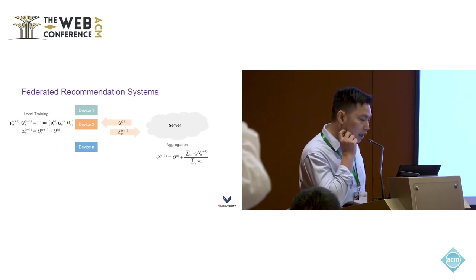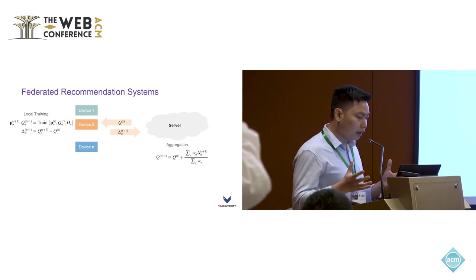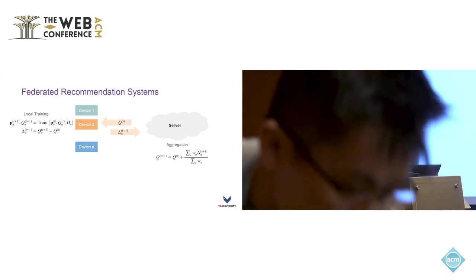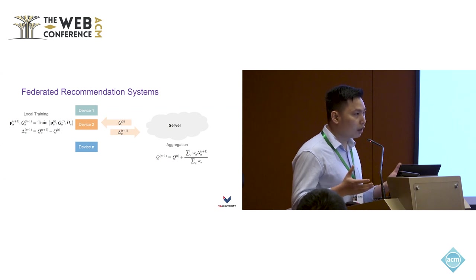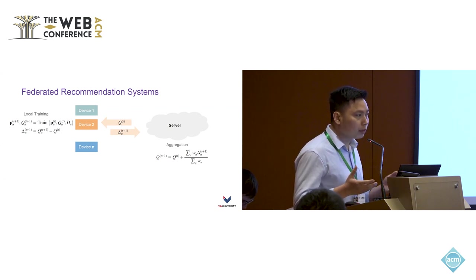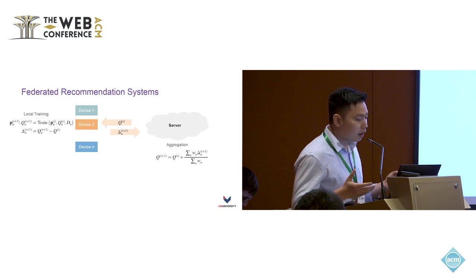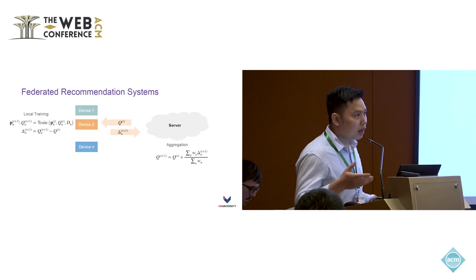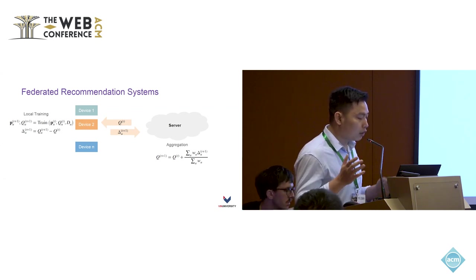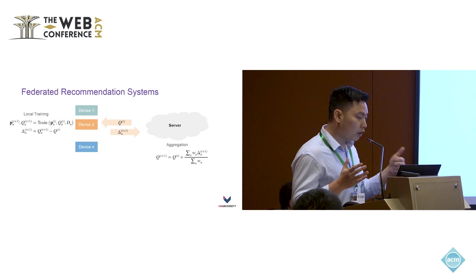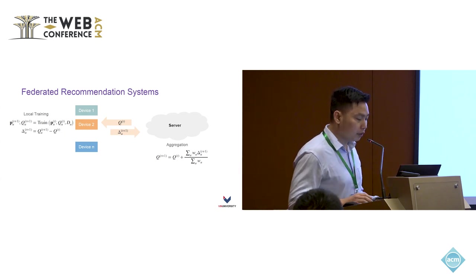This slide illustrates the very general schematic overview of federated recommendations, where you have multiple devices as clients and then you have a server. The server will do the aggregation job — trying to update the global model from all the gradients from the clients. On the other side, the client will use the global model sent from the server, download it to update a local model based on the local data it possesses, and then send back what we call the delta value — the difference between the global model in the current round and the global model it received from the server.